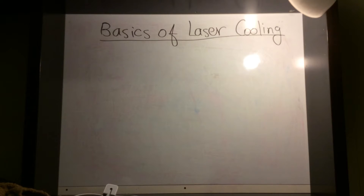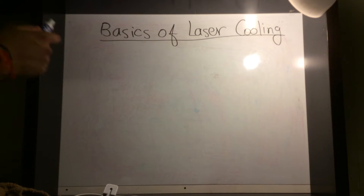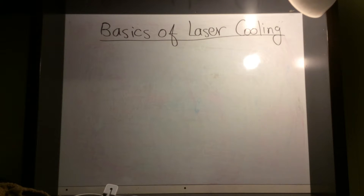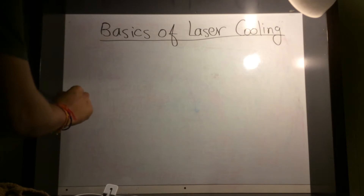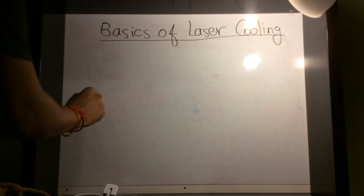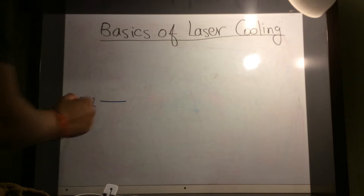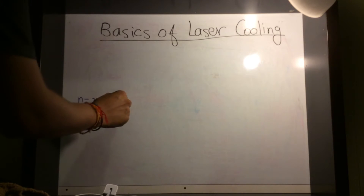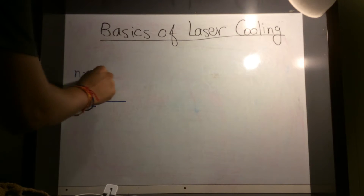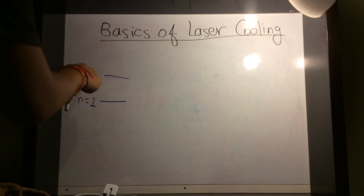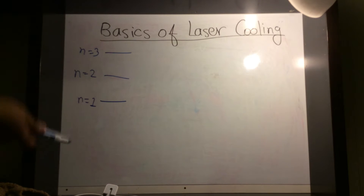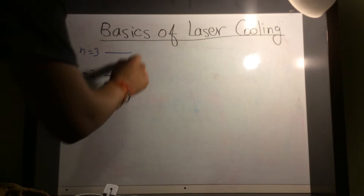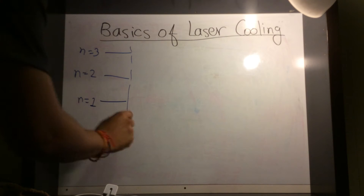Very basic principles. You do know that atoms have energy levels. So an atom, for example hydrogen, you have the n equals 1 level, which is the ground state, then n equals 2 level, which is the first excited state, n equals 3 level, and you have multiple levels. That's that.